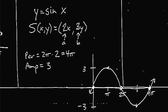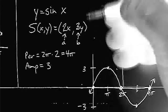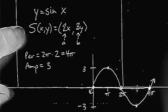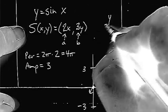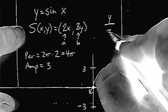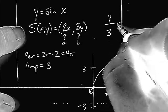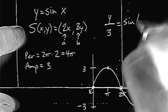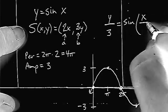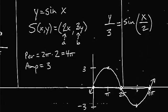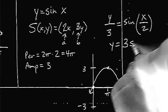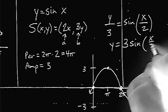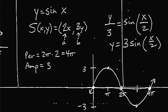What's the equation of this function after the scale change? y over b equals sine of x over a — that's your fireproof form. If you solve it for y, another form of the same equation would be y equals 3 sine of x over 2.